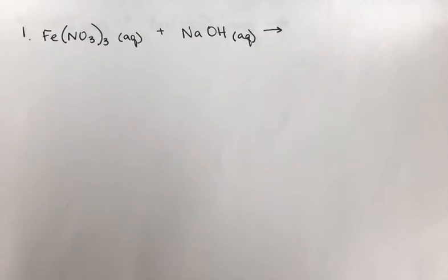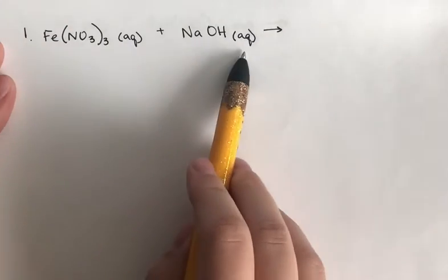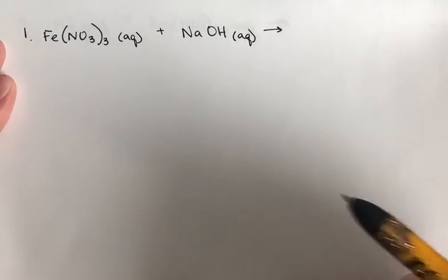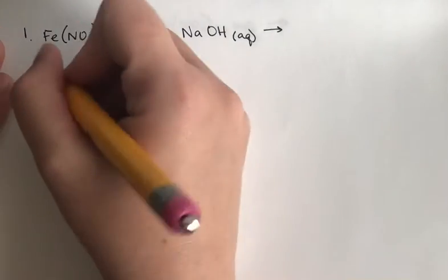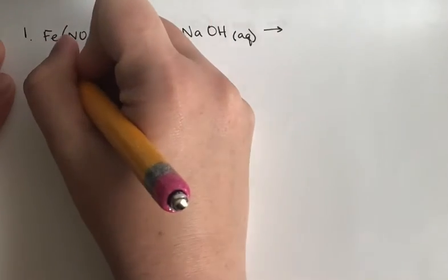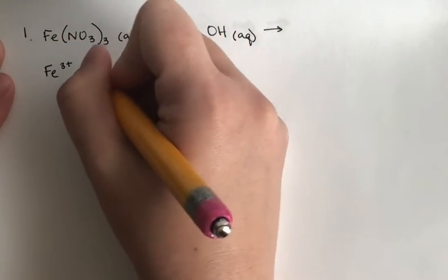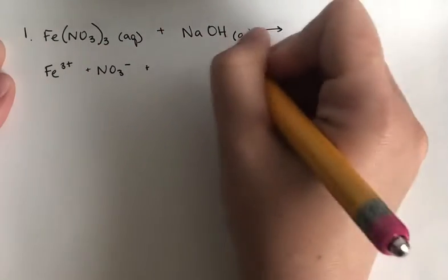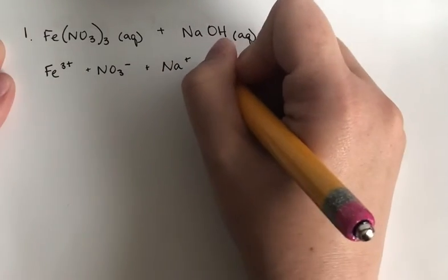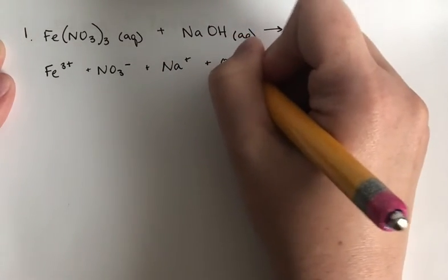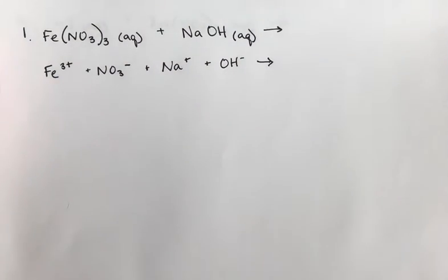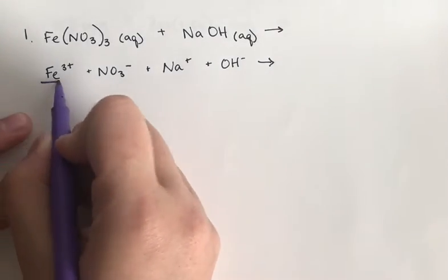For problem number one, the first step is to put these in their different ions because these are both aqueous species, which means that they dissolve in water or are soluble in water. So I'm going to say iron 3+ (Fe³⁺), nitrate (NO3⁻), plus sodium ion (Na⁺), plus hydroxide (OH⁻).